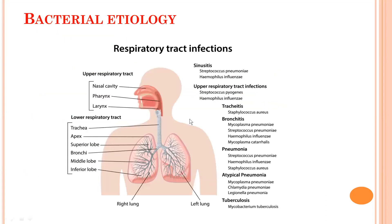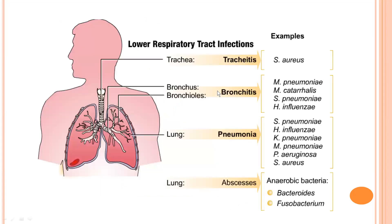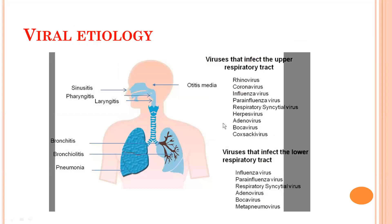This simplified picture shows the etiology of bacterial upper and lower respiratory infection. Lower respiratory tract infection will be discussed in another lecture. For viral etiology, the common respiratory viruses include mostly rhinovirus, coronavirus, influenza, para-influenza virus, respiratory syncytial virus, herpes, adenovirus, bocavirus, and coxsackievirus. The same viruses are also involved in lower respiratory tract infection.